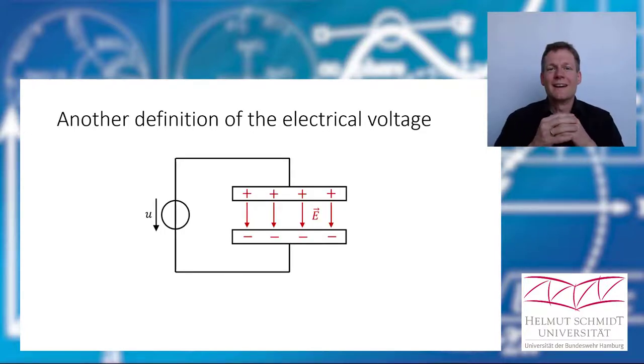I will give you another definition for the voltage. Let's say we have a capacitor. That would be another basic circuit element. A capacitor consists of two conductive electrodes and you could charge it. In our example here, we have positive charges on the top plate and negative charges on the lower plate. This charge separation was done by a voltage source.